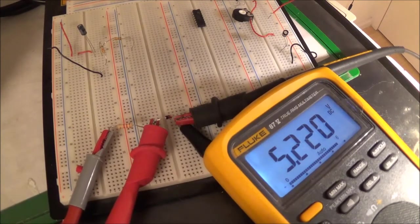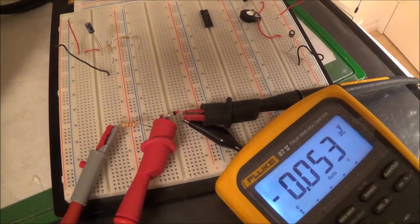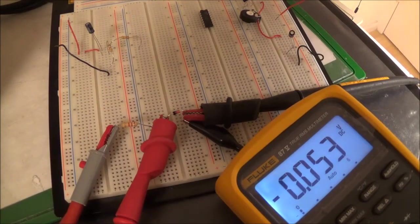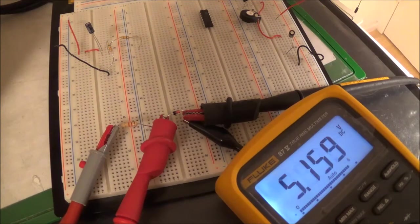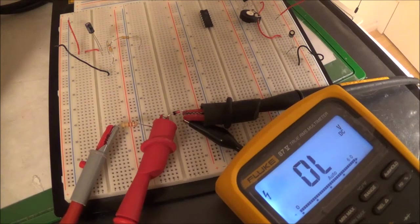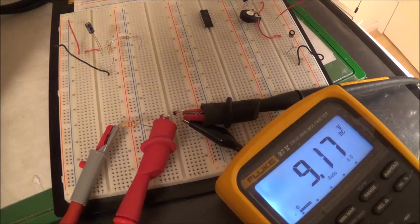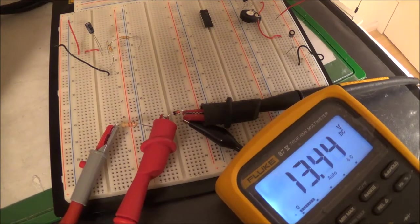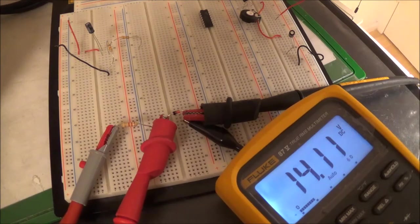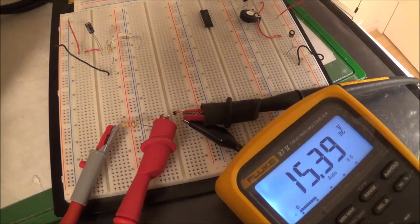Now I have the second zener diode hooked up, and I'm slowly going to increase the voltage of the power supply. Once the voltage stops going up, I'm going to know I've reached the zener voltage. Then I'm not going to keep turning it up—that wouldn't make any sense.